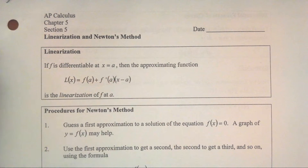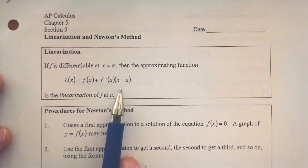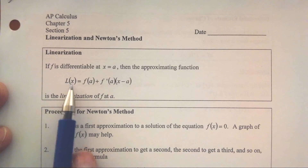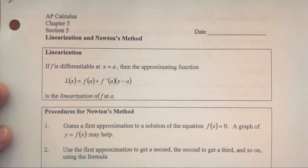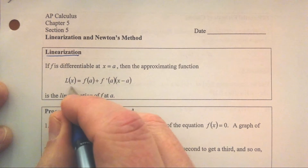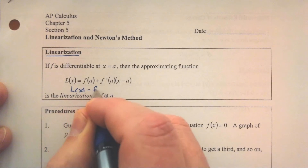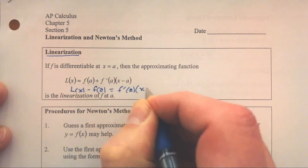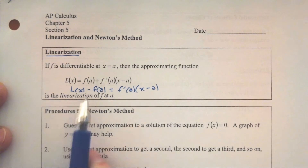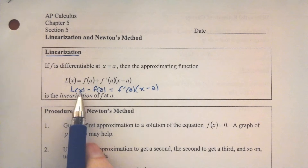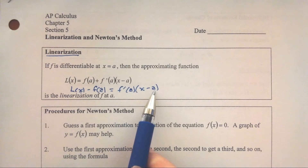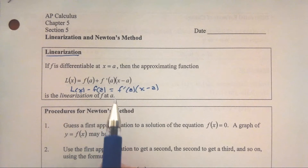I'm going to piece this into basically three different lessons. The first thing I'm going to talk about is linearization. So if f is differentiable at x equals a, then the approximating function L(x) is f(a) plus f'(a) times (x minus a). This is called linearization for a reason. If we subtract f(a) from both sides, we get a y-value minus a y-value equals a slope times an x-value minus an x-value — this is really just point-slope form.